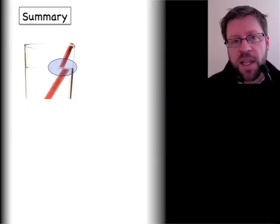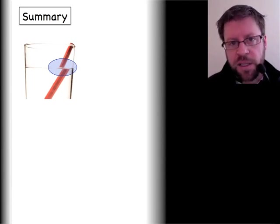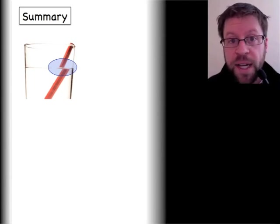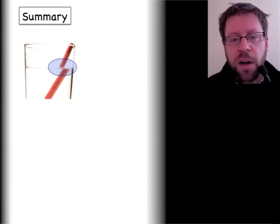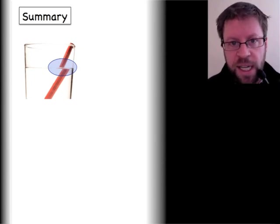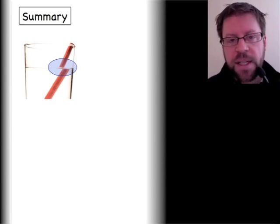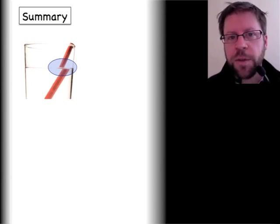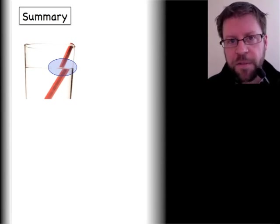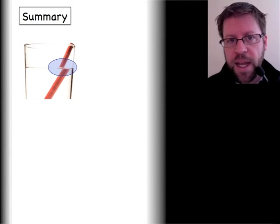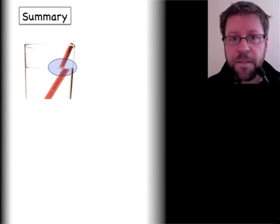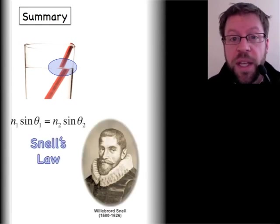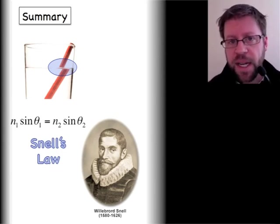That brings us back to why the straw looks broken. For the part of the straw still in air, light originates at the straw, travels through air, then glass, then air again, and into your eyeball. But when the straw is underwater, the light originates from the straw, travels through water, bends into glass, then from glass to air, taking a pretty different path to your eyeball. Your brain just assumes it came from a straight direction, but you see that difference in bending — and that's why the straw appears broken.